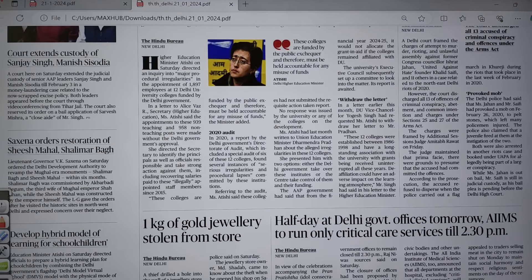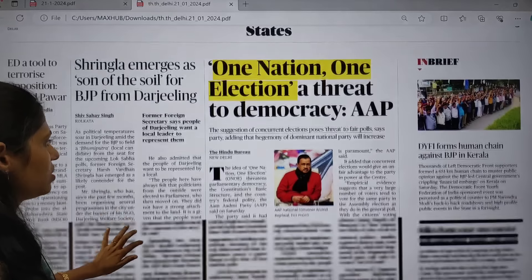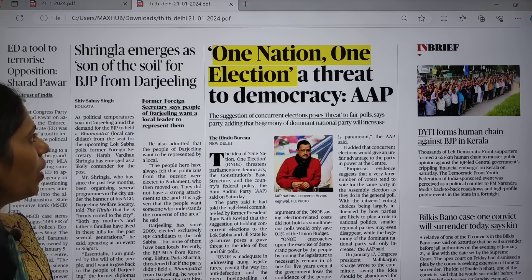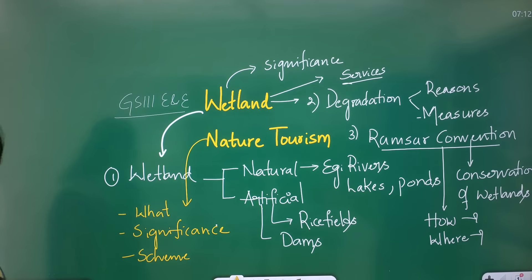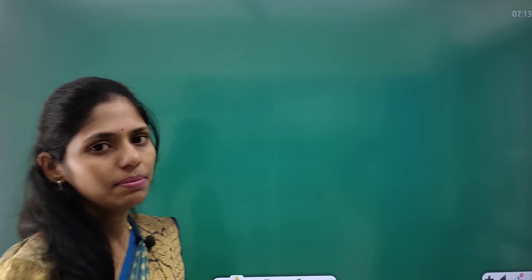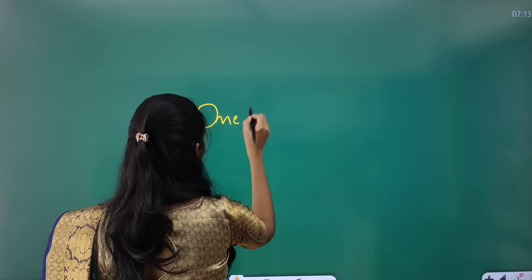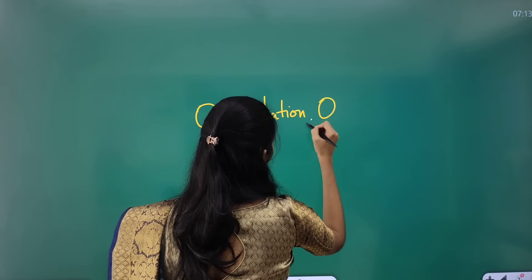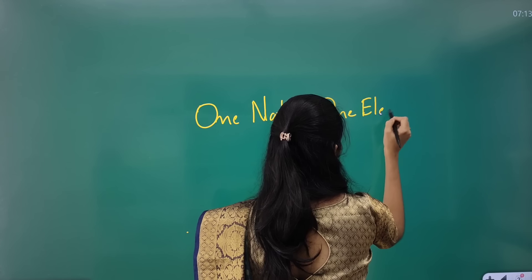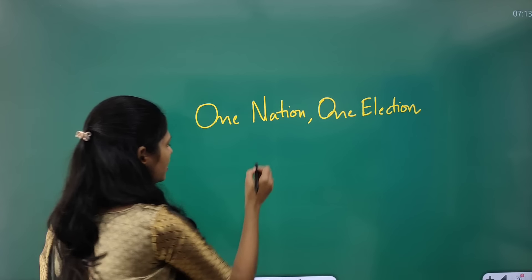In the city page I found nothing much important. In the states page, one article says 'One Nation One Election — A Threat to Democracy, says Aam Aadmi Party.' As you all know, Aam Aadmi Party recently got the status of a national political party. This One Nation One Election concept is also called simultaneous elections.